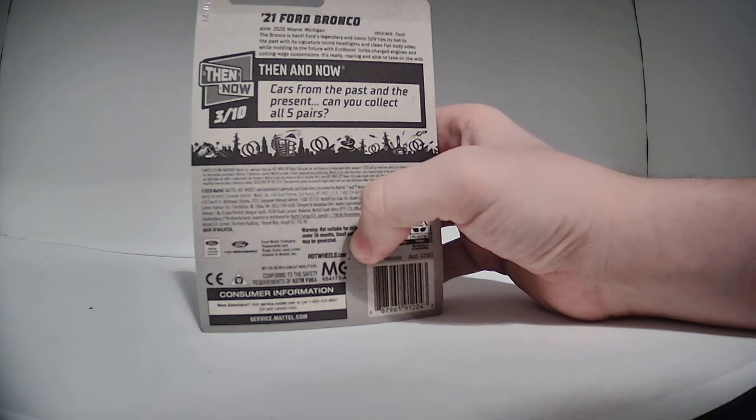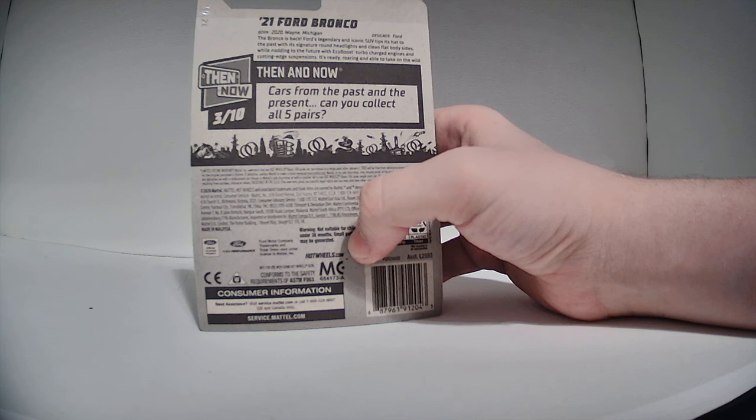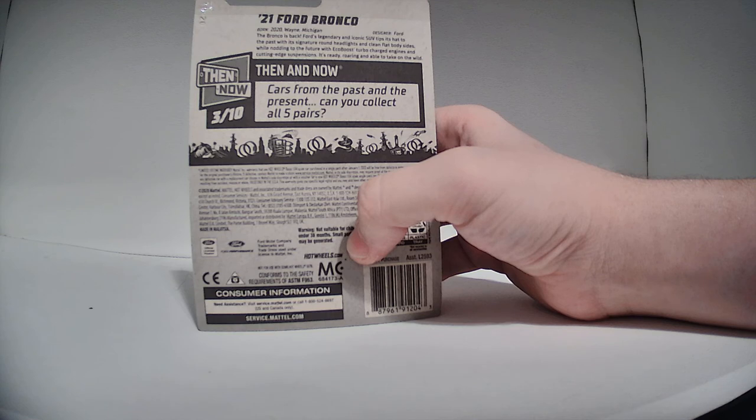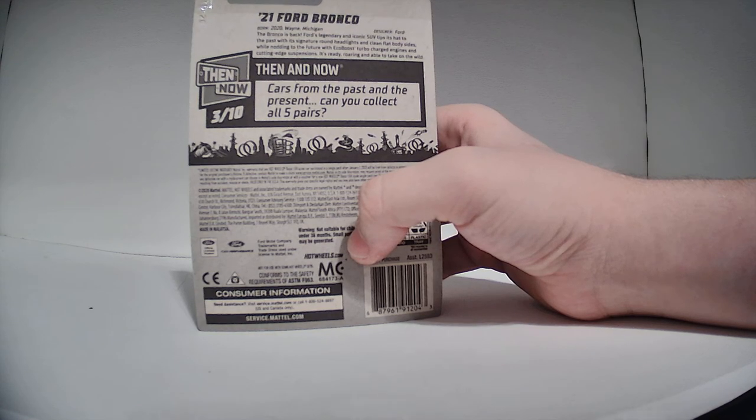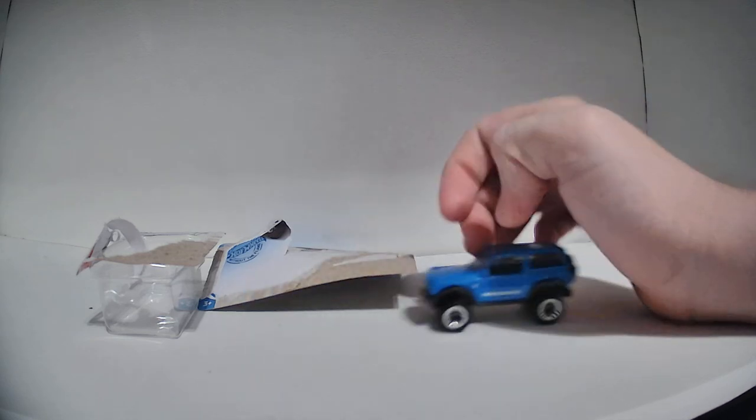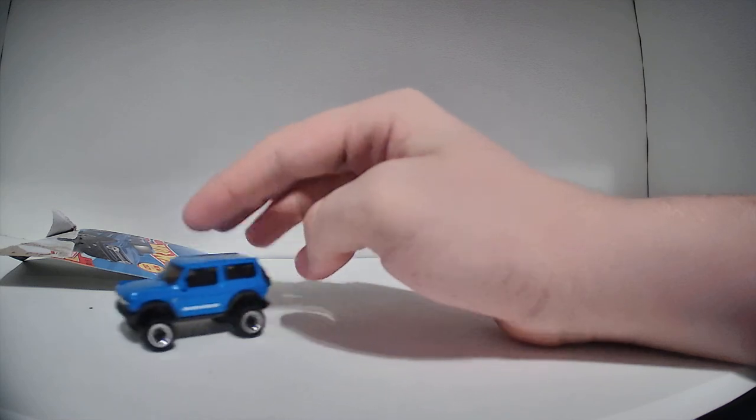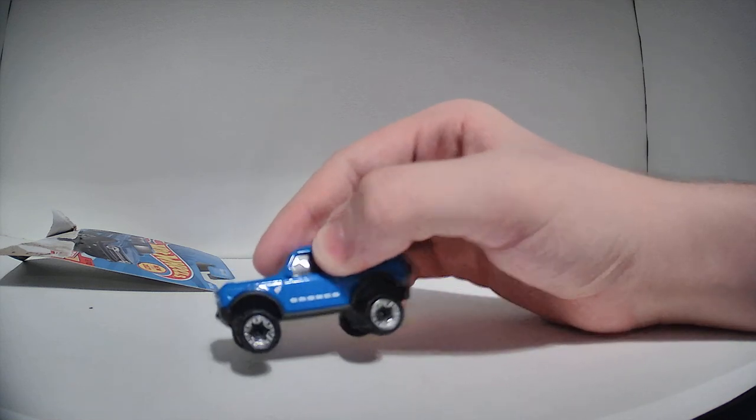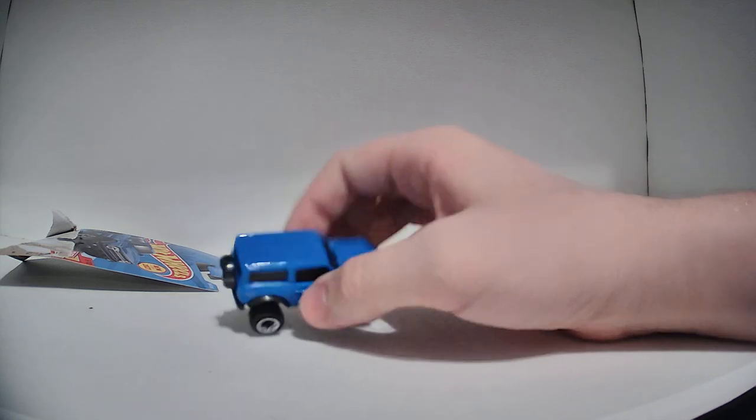2021 Ford Bronco, new for 2021. The Bronco is back. Ford's legendary SUV tips its hat to the past with its signature round headlights and clean flat body signs, nodding to the future with EcoBoost turbocharged engines and cutting-edge suspensions. Let's get this thing open. This guy looks like it might not fit in the track. Does he have functional suspension? No. Okay, this thing's cool. I'm hoping he'll be able to fit on the track because he's kind of wide. It says Bronco on the front grille on both sides. If you're a huge fan of the Ford Bronco, go ahead and pick it up.